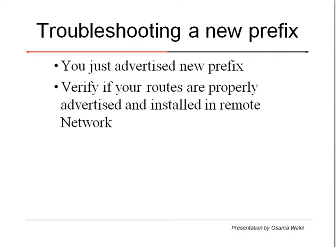Let's say you have advertised a new prefix from your network onto the internet and you want to see if your peering partners can receive it, or if other parts of the internet can see those prefixes being advertised. Or let's say your network cannot be routed to a destination in some remote part of the world, and you want to know if your prefixes are being received properly over there or not.